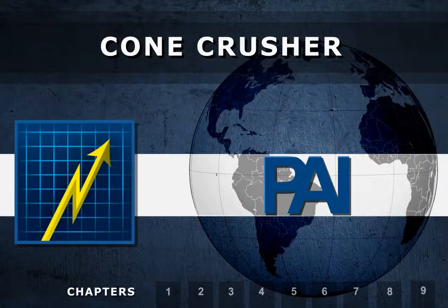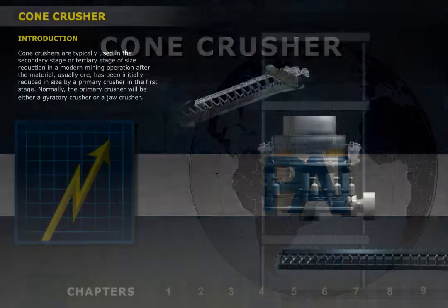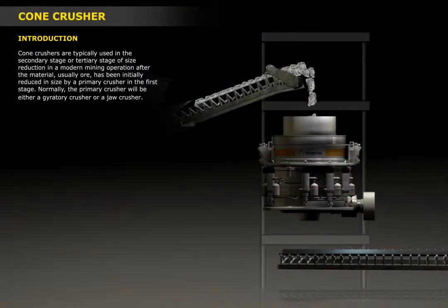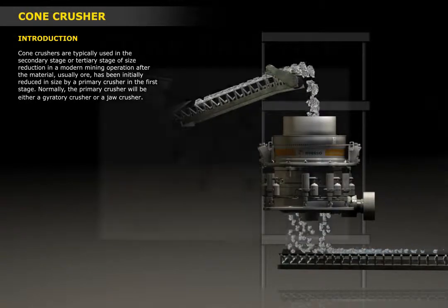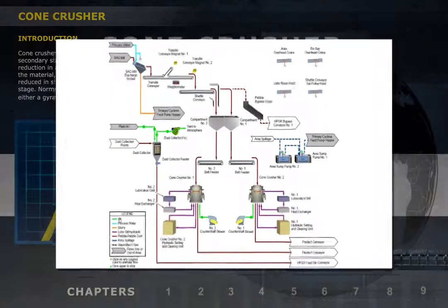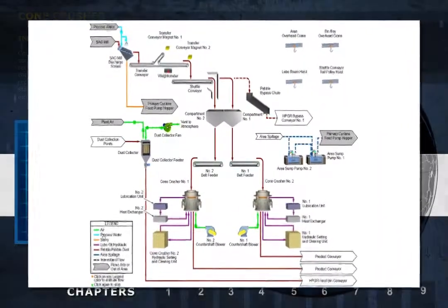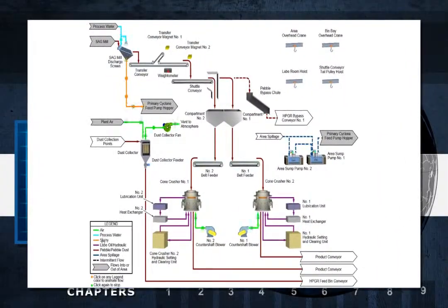In this training module, we'll cover the characteristics of a cone crusher that's designed to be the second or third stage of size reduction in a crushing circuit, in which the first stage is a primary gyratory or jaw crusher.